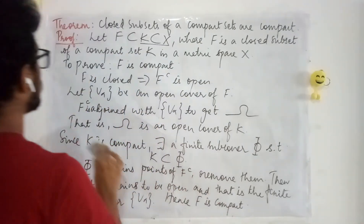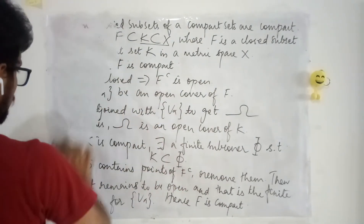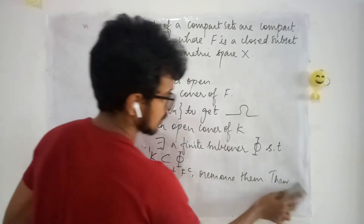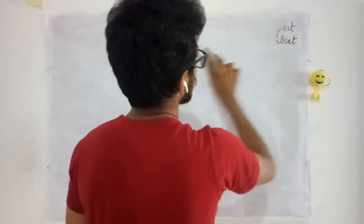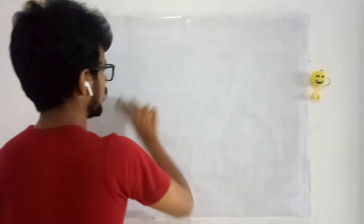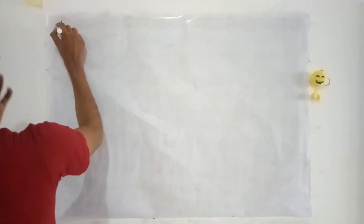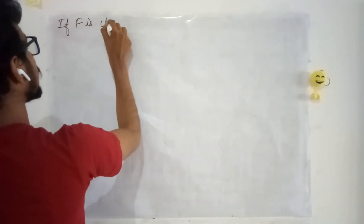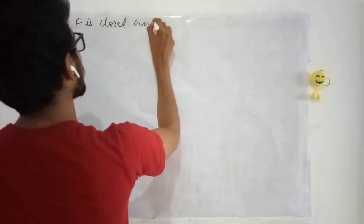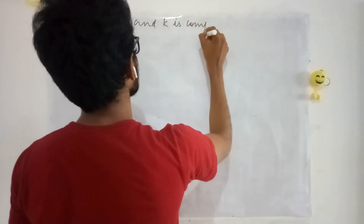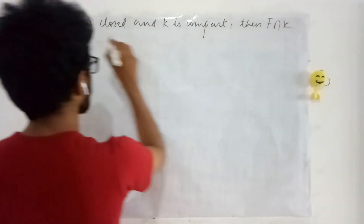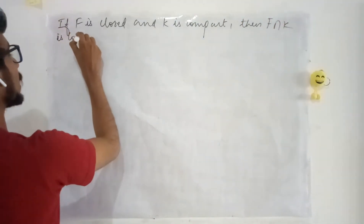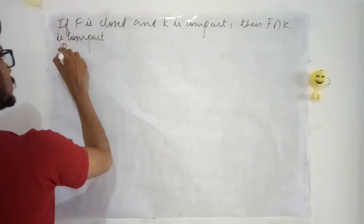Let us see a corollary based on this result, for which we will recall a few results from previous lectures. If F is closed and K is compact, then F intersection K is compact. This is the result; let us prove it.